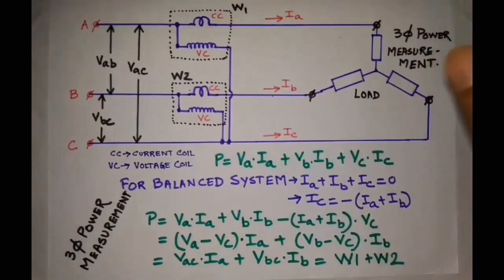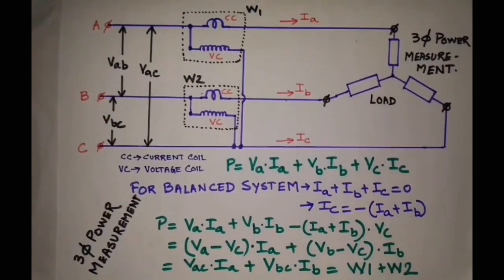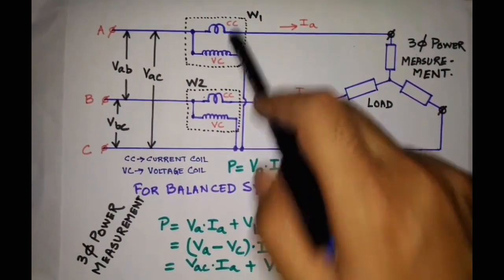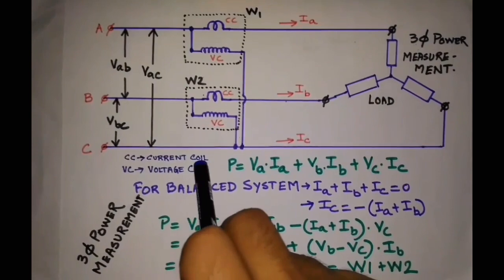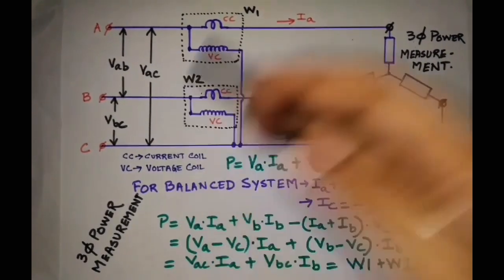Before going to the main topic, few things we have to know: a wattmeter has two coils, one is CC which is called current coil and another is VC which is called voltage coil or pressure coil.